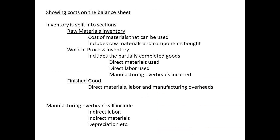On the balance sheet, costs for a manufacturing business are shown in a particular way. Remember that until sold, the goods are treated as an asset. This means that inventory is split into three different sections. The first is the inventory of raw materials, including both raw materials and components. The second part is an inventory of work in progress, which includes all the partially completed goods. Partially completed goods will have used materials and labour, and will have incurred a share of manufacturing overhead. The finished work will include all the direct materials and labour used, plus the share of manufacturing overhead. Remember that manufacturing overhead includes such items as indirect materials and indirect labour, depreciation, rent, insurance, and other items.